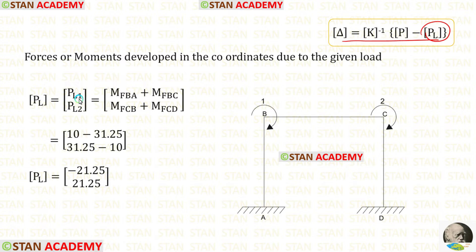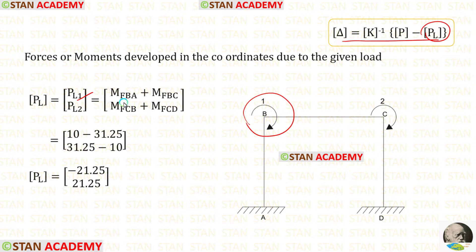Let us find PL1. Our first coordinate is at point B. At point B, we have found two fixed end moments: M of BA and M of BC. We have to add both of them. After adding, we get −21.25.